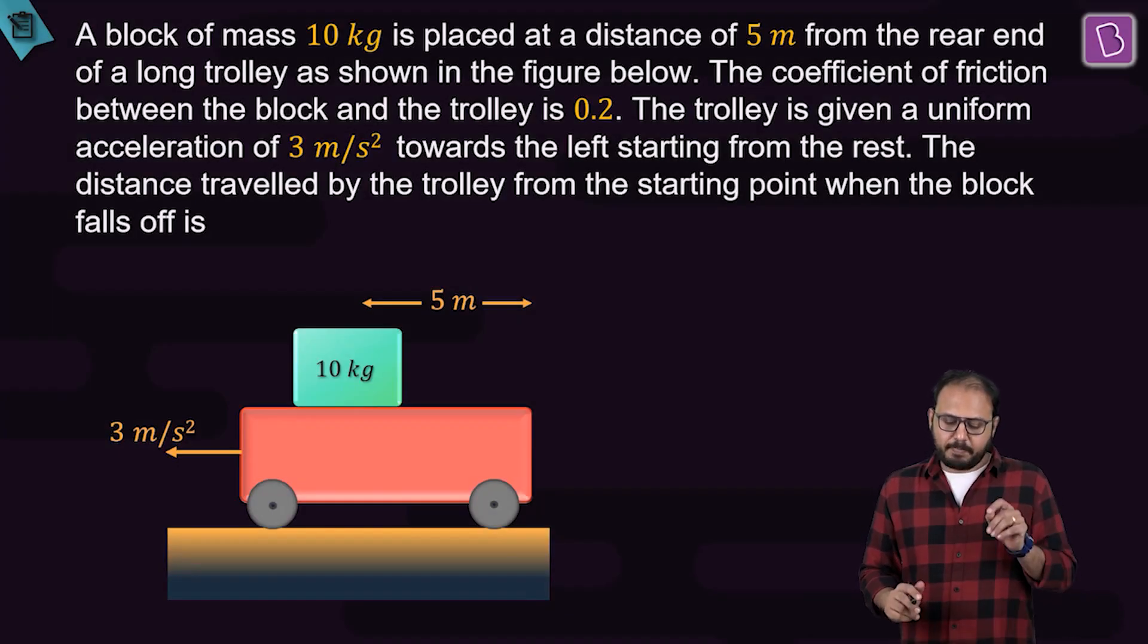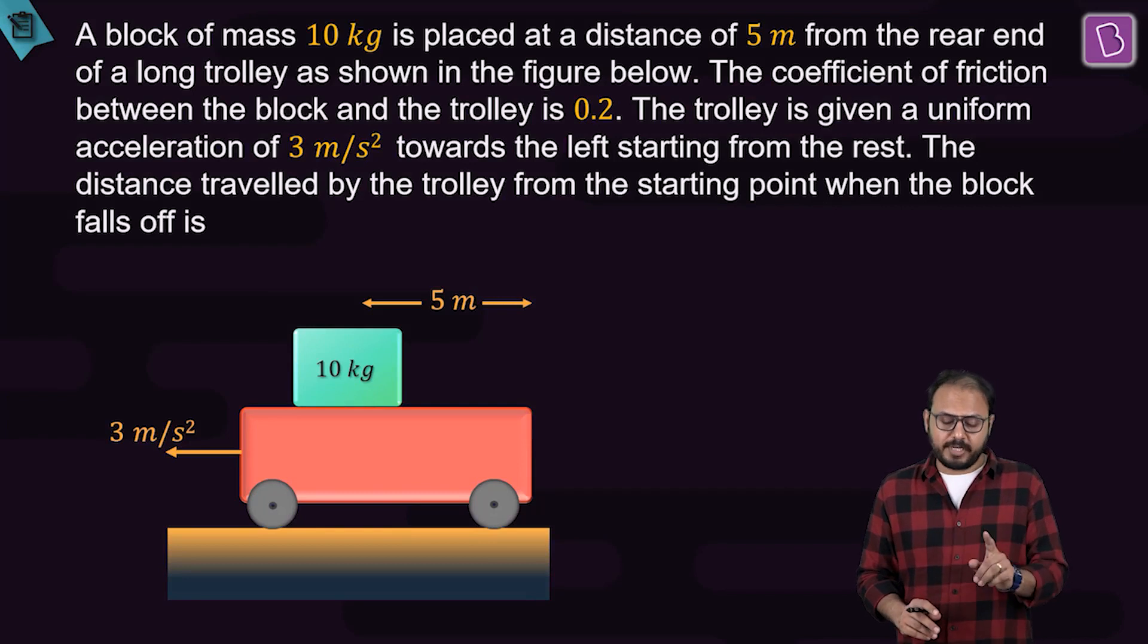A block of mass 10 kg is placed at a distance of 5 meters from the rear end of a long trolley as shown. The coefficient of friction between the block and the trolley is 0.2.